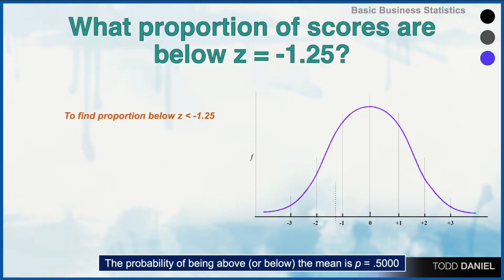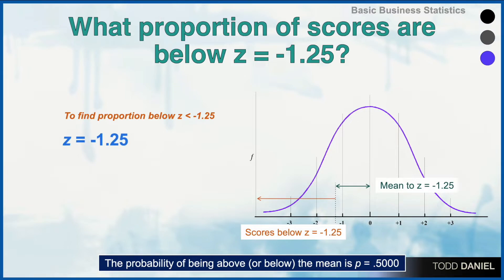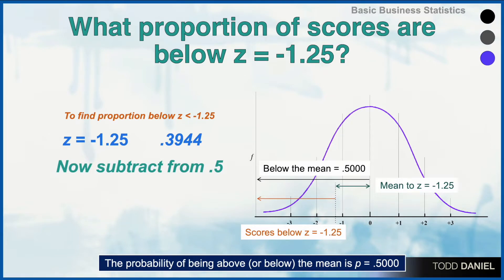We know that scores from 1.50 to the mean are 0.4332, and additionally, half of the scores are below the mean. We simply add 0.5 to get 0.9332 — meaning 93.32% of scores are below a z of positive 1.50. For scores below a z of negative 1.25, we go to the z-table and find the proportion between the mean and negative 1.25 is 0.3944. Because half of scores are below the mean, we subtract 0.3944 from 0.5, leaving 0.1056 — so 10.56% of scores are below a z of negative 1.25.